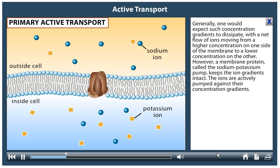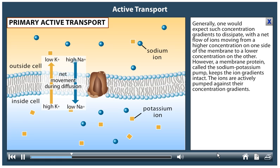Generally, one would expect such concentration gradients to dissipate, with a net flow of ions moving from a higher concentration on one side of the membrane to a lower concentration on the other.